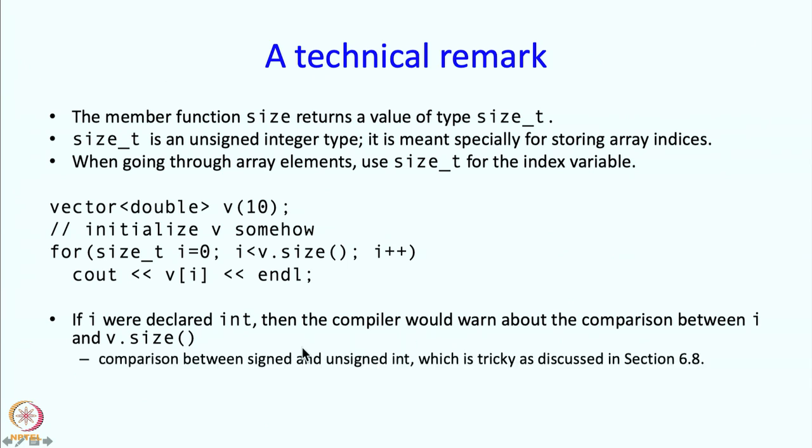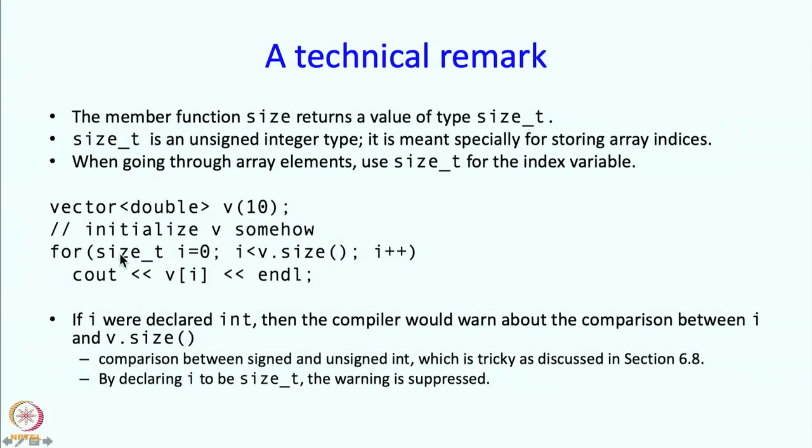Therefore, instead of declaring this control variable of type int, if you declare it of size_t, you will not get that warning about this comparison between an unsigned int and an int. This is tricky as it was discussed in 6.8. The compiler puts a warning, but when you compile, you do not want any warnings, you do not want any clutter. Therefore, it is a good idea to just use size_t over here rather than an int. If you use int, it is not a big deal, but it will just have clutter when you compile.